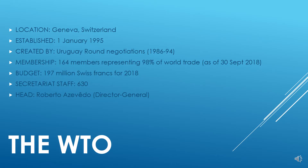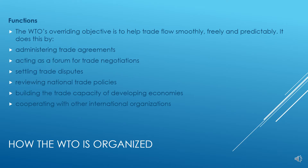Looking at the details of the WTO: it is located in Geneva, Switzerland. It was established on 1st January 1995, created by Uruguay Round negotiations from 1986 to 1994. There are 164 members representing 98% of world trade. As of September 2018, it has a budget of 197 million Swiss francs for 2020. The secretariat staff is 630 members, headed by Director General Roberto Azevedo.